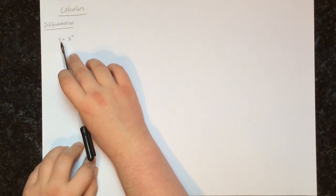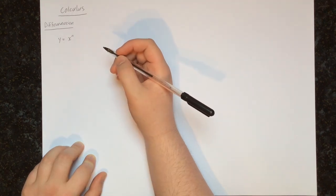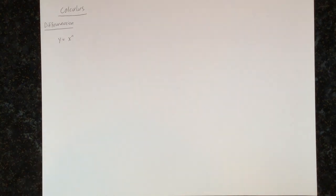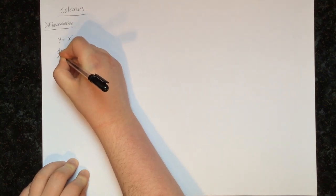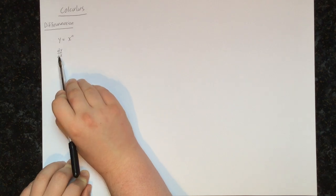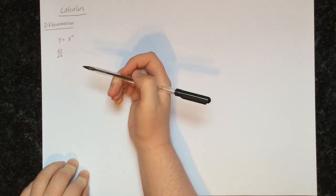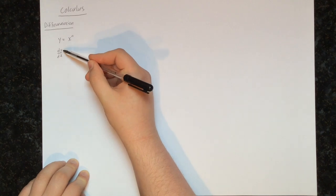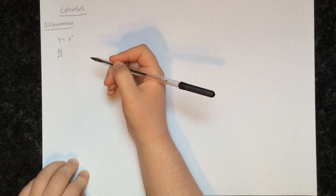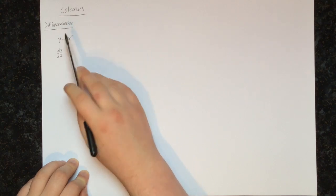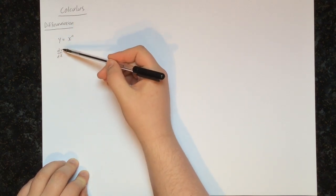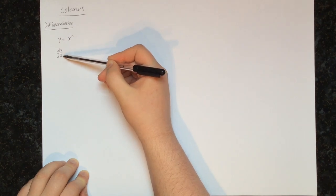So n could be 2, 3, 5, 50, or any natural number. What we want is to find something called the derivative, and the notation for that is dy/dx. It looks like a fraction — it's not quite a fraction, it sometimes behaves like one. On the higher level course we will discuss exactly what it is, but for the moment all we need to know is that given some function y, we want to find its derivative dy/dx.